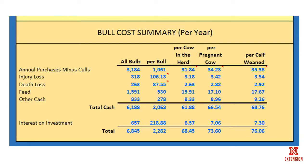Finally, we get to a bull cost per year. It includes all the expenses we put in, plus interest on capital investment or interest on money borrowed for those bulls. We get down to a cost per calf weaned per cow exposed. In this example, we're going to spend around $76 to get a weaned calf based on the scenario presented.